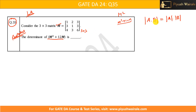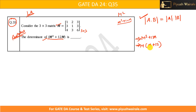Can we apply this property here? Let's try. We have the expression M squared plus 12M. We can take M common and write it as M into (M plus 12I). So we rewrite the expression as M times (M plus 12I), and now take the determinant of this.